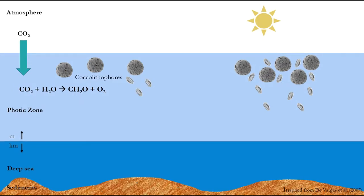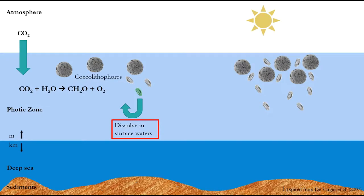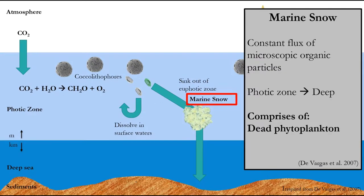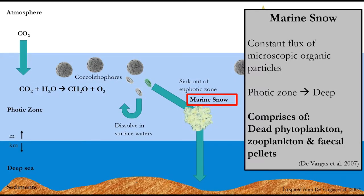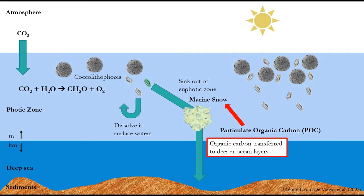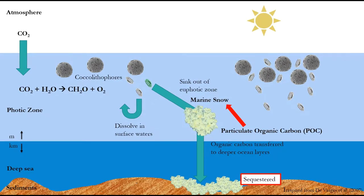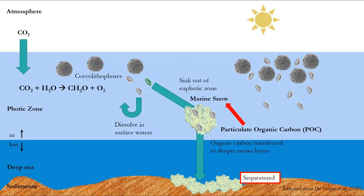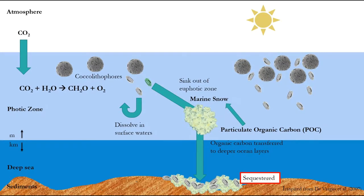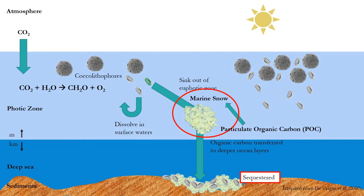Following the death of a coccolithophore, the carbon assimilated in the coccoliths will either dissolve in the surface waters or sink out of the euphotic zone as part of marine snow. Marine snow is the term used to describe the constant flux of microscopic organic particles from the upper photic zone to the deep ocean, and comprises aggregates of dead phytoplankton, zooplankton, and animal faecal pellets. In the ocean, one of the main pools of organic carbon is particulate organic carbon (POC). POC is the main pathway by which organic carbon formed by photosynthesis in the ocean surface layers is transferred to deeper ocean layers where it may be sequestered, and therefore POC is an integral part of the global carbon cycle. The aggregation of coccoliths with the marine snow ballasts organic matter that otherwise would not sink to deep oceanic layers and potentially to the deep sea floor. The massive downward flux of carbon from the upper ocean to the sediments at the sea floor in this marine snow form results in the removal of carbon that would otherwise be transferred to the atmosphere.